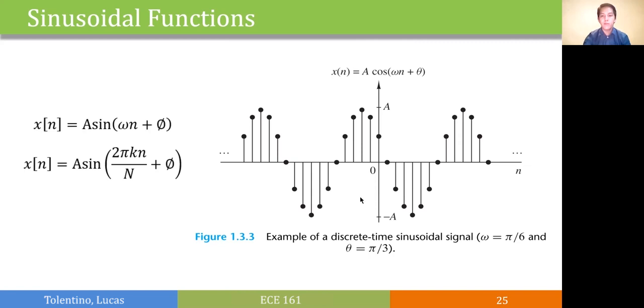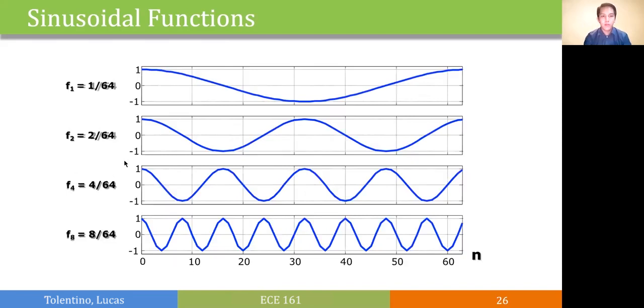We can also use the alternative representation, which is a sine 2 pi k n over N plus phi, where k over N is our frequency and we can represent k over N as integer multiples of our fundamental frequency 1 over N as shown in the next figure. As you go higher in k, you can have a higher frequency sinusoid, and the fundamental frequency here is 1 over 64.